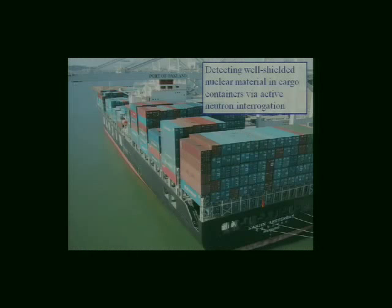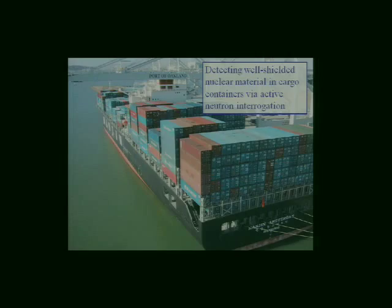What I want to talk about today is an application that some of us here in the department have been working on for a while. It has to do with looking for the materials necessary to make nuclear weapons in cargo containers. The thing it takes to make a nuclear weapon is fissionable material — specifically two isotopes: uranium-235, which we use in nuclear power plants, or plutonium-239. Those are the most difficult to obtain ingredients to make a nuclear weapon.